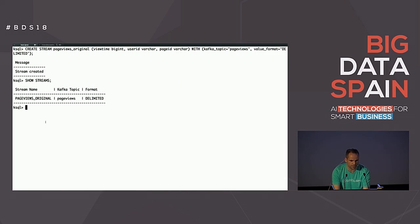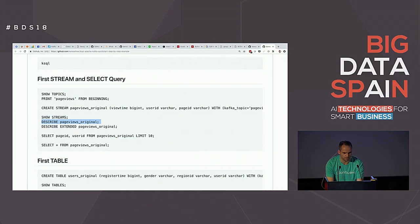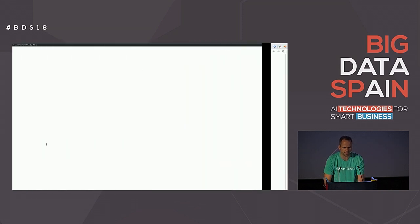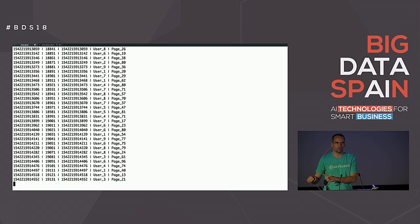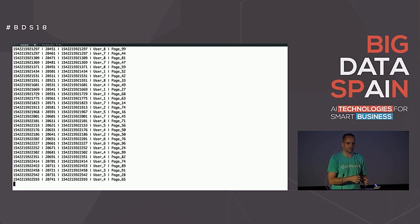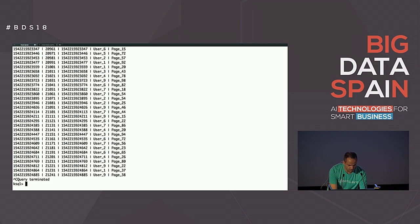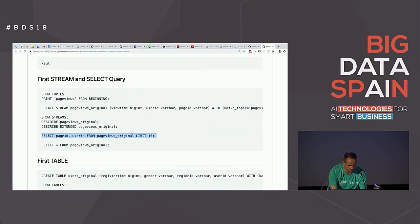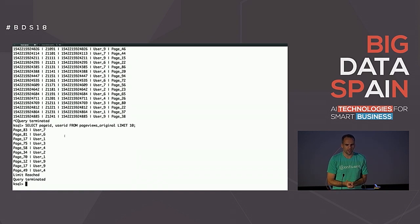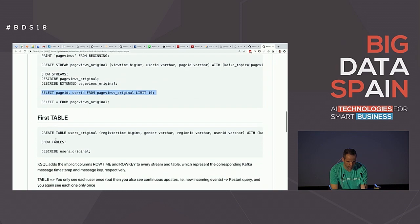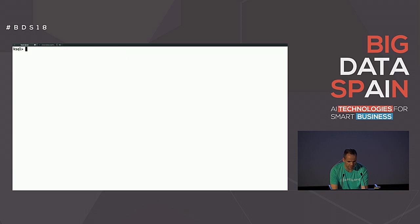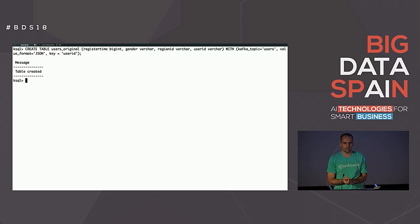We can take a look at the streams, describe the stream to see its schema, and then write SQL queries against it. I select from 'pageviews_original' — and here you see the main goal of KSQL: continuous queries that never stop until you press Ctrl+C. They're continuous because afterwards you want to deploy them to production at scale to process millions of messages. The other option: you can select just the page and user ID with a 'LIMIT 10', for interactive analysis that automatically stops after the limit is reached.